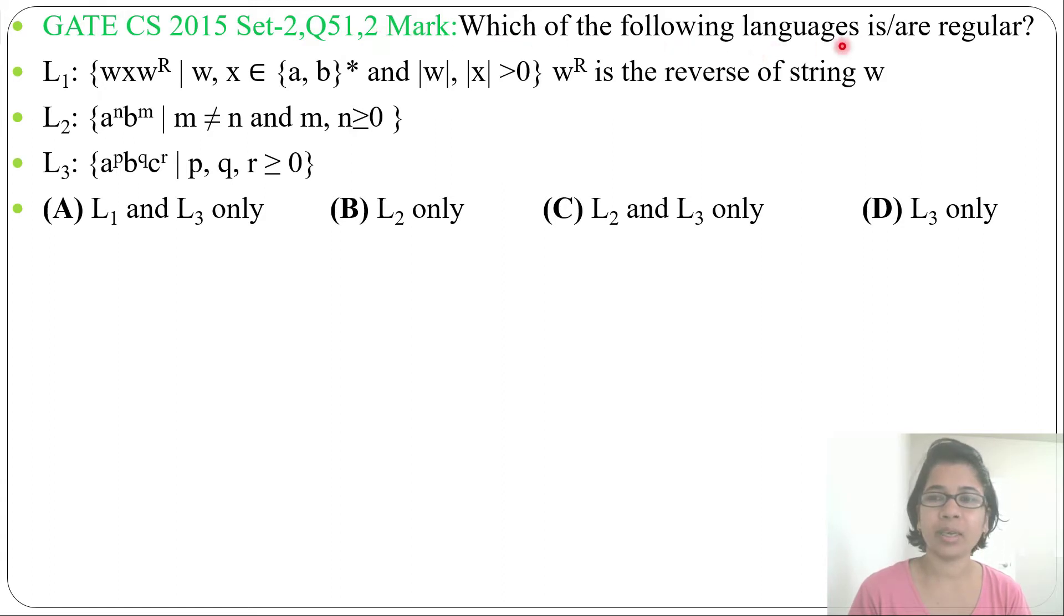Which of the following languages is or are regular? Three languages are given, four options are given, and it's asking which is regular. Let's go one by one. First language: WXW^R, where W and X belong to {a,b}*, W length and X length greater than 0. W^R is the reverse of string W.